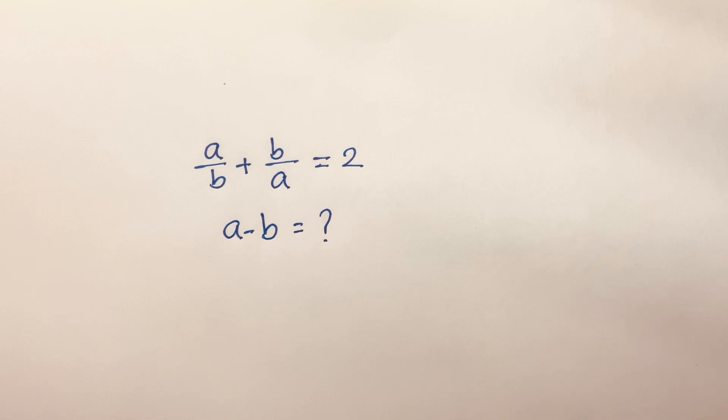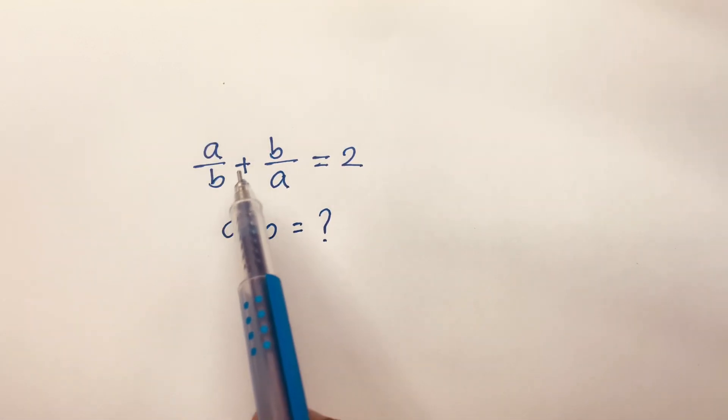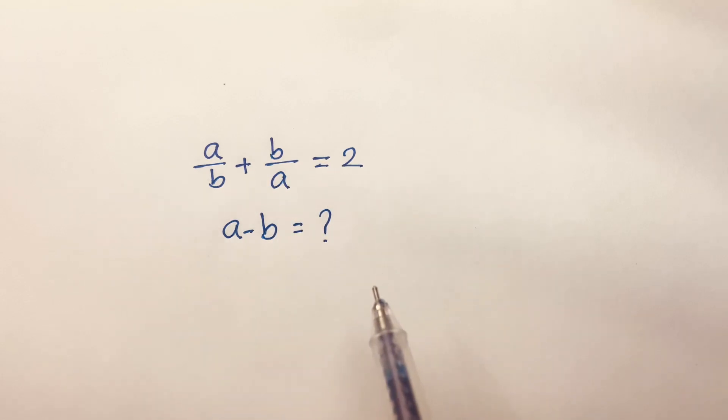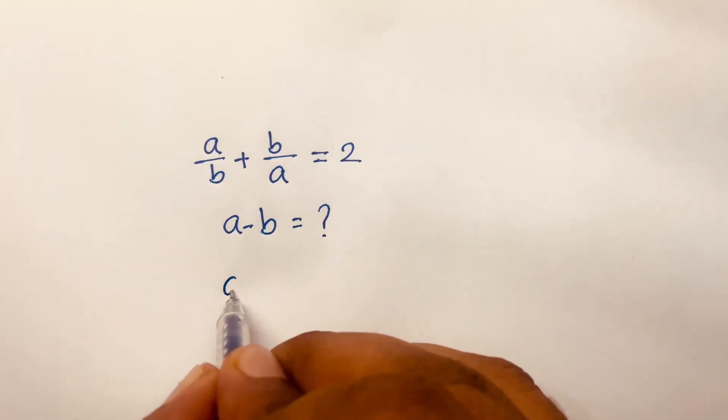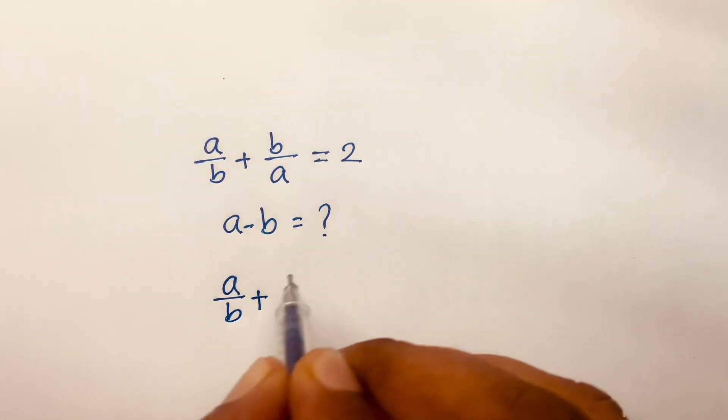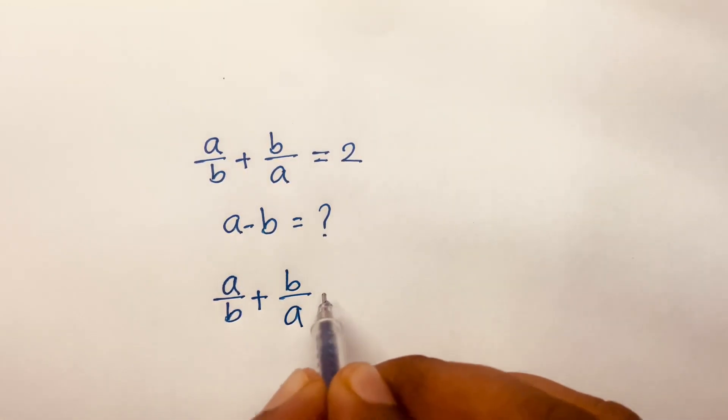How to solve this Math Olympiad question: a/b + b/a = 2, a - b = ? So our question is: a/b + b/a = 2.